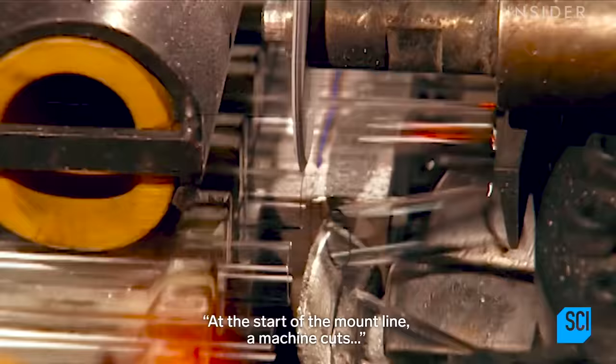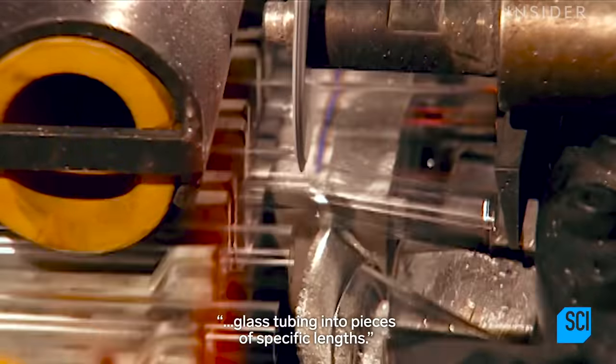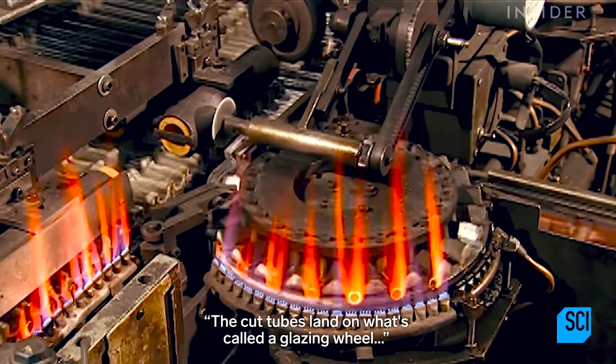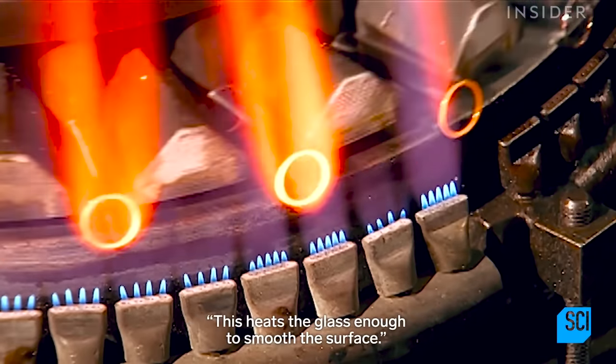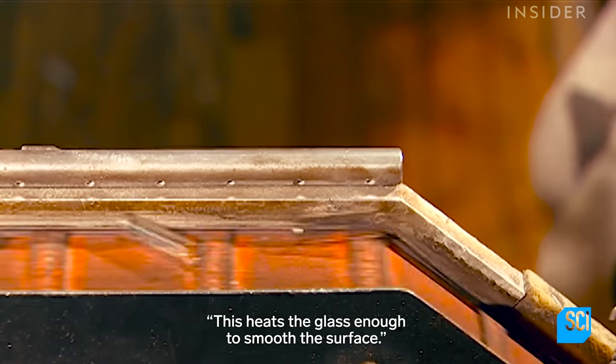At the start of the mount line, a machine cuts glass tubing into pieces of specific lengths. The cut tubes land on what's called a glazing wheel that runs them through a gas flame for about seven seconds. This heats the glass enough to smooth the surface.